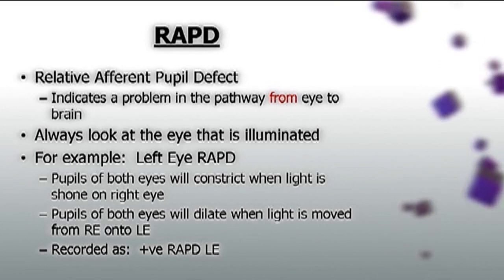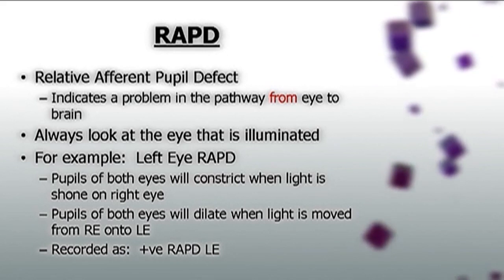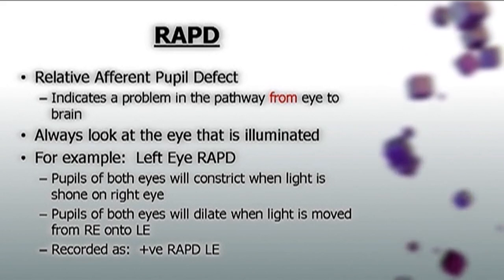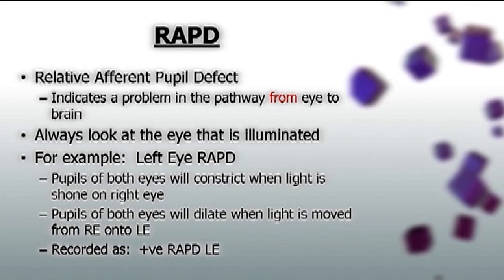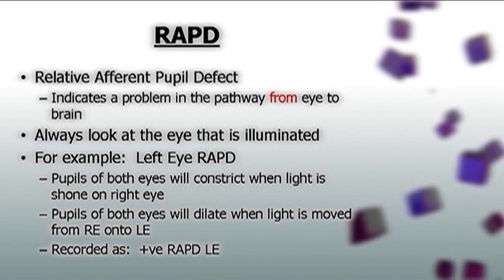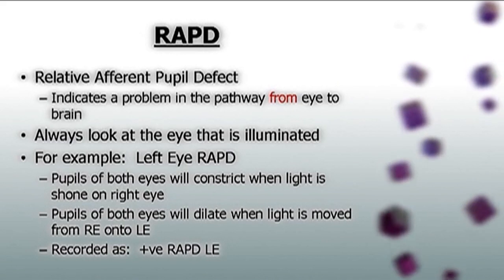The torch is left there for another two to three seconds, and again returned to the original eye. With the swinging flashlight test, you're always looking at the eye which is being illuminated. A relative afferent pupil defect will mean that when you flick the light to the affected eye, it will not constrict — it will dilate, as the consensual response from the other eye overrides the afferent response from the eye that is now being illuminated.